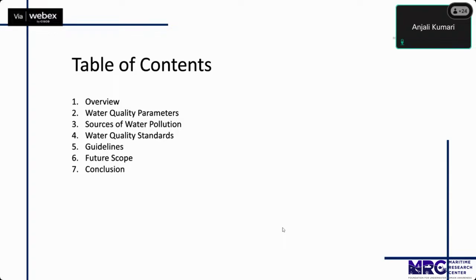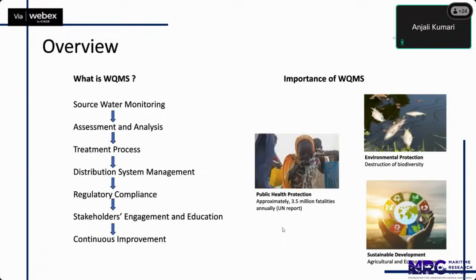Let's understand what a water quality management system is. When we say water quality management system, we are concerned with qualitative analysis and not quantitative analysis. It involves various steps starting with source water monitoring, assessment and analysis, treatment process, distribution system management, regulatory compliance, stakeholder engagement and education, and continuous improvement.